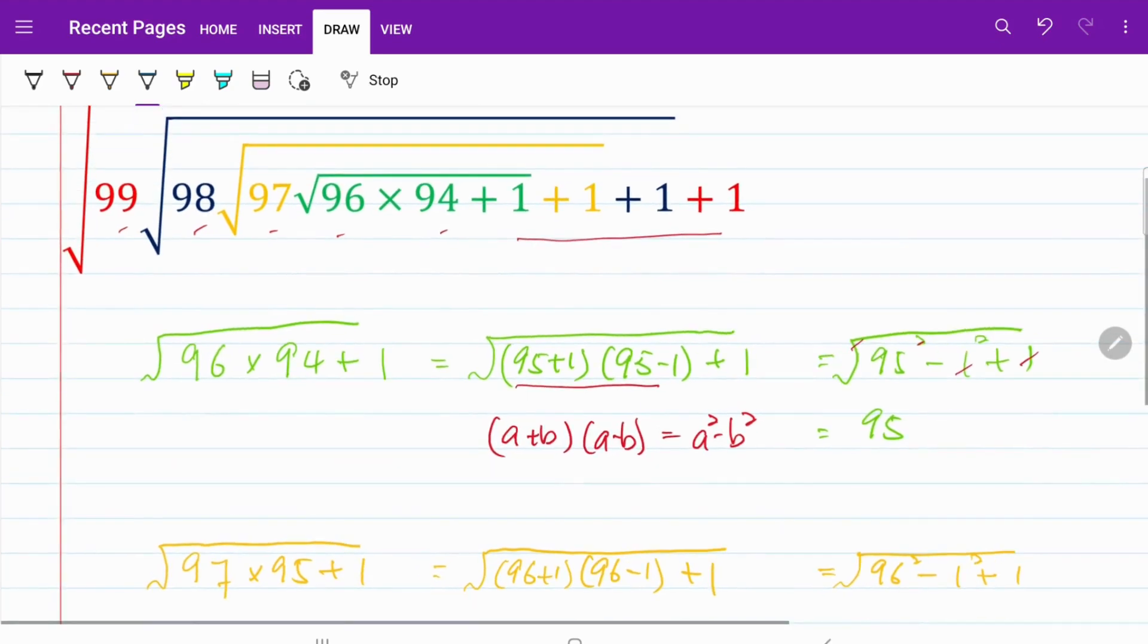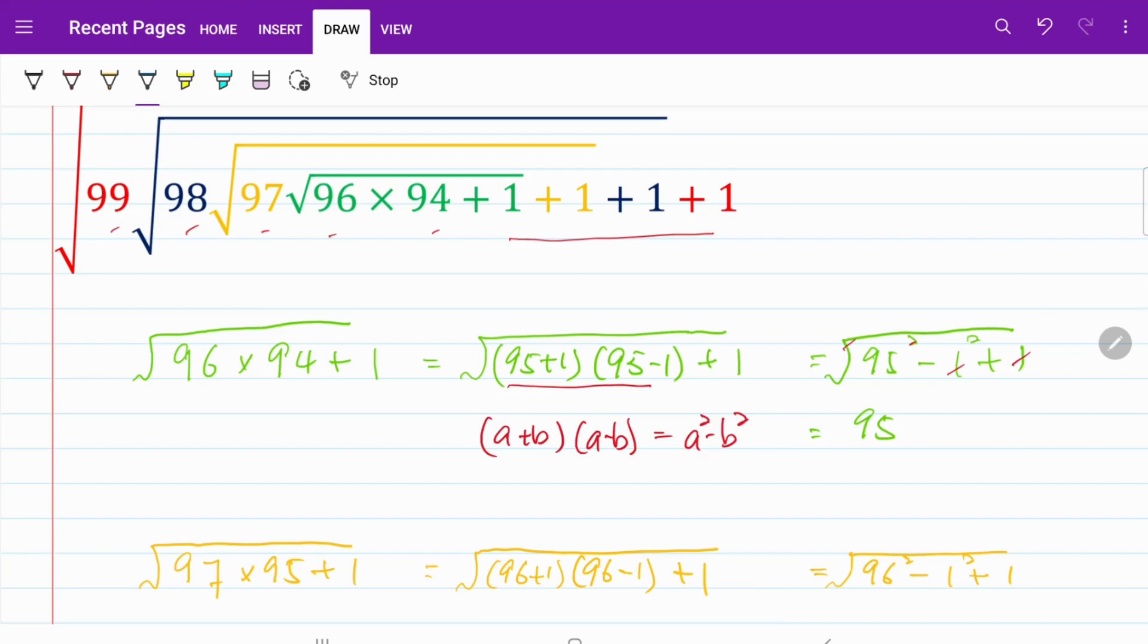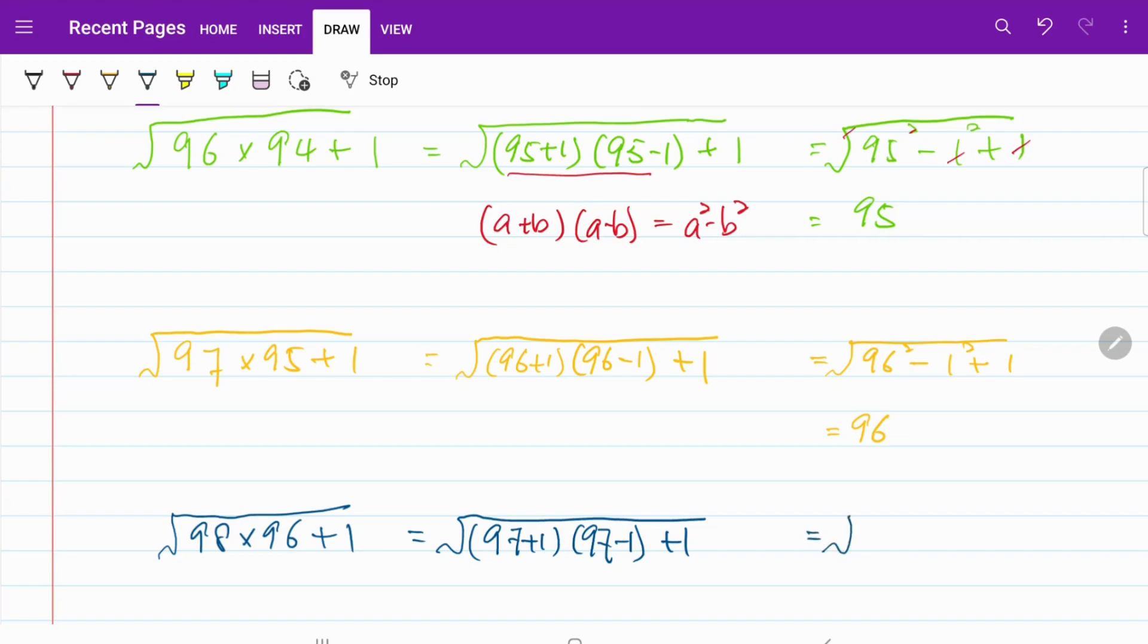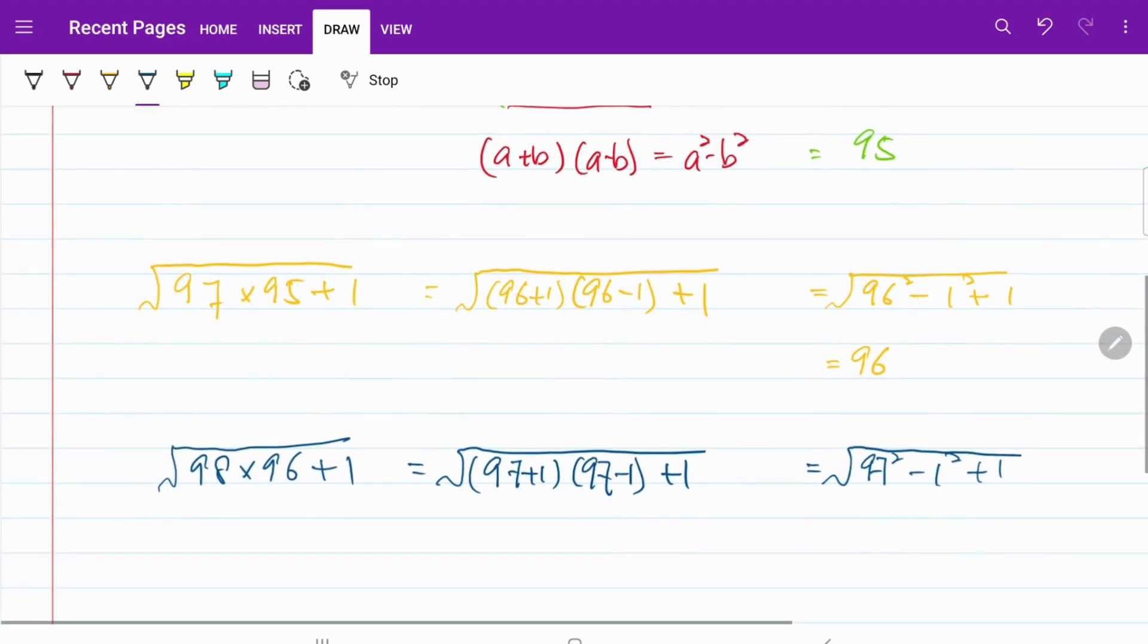Now we are focusing on the blue square root. The blue square root will be 98 multiplied by 96 plus 1, which is written as 97 plus 1, 97 minus 1 plus 1, which is the same thing, 97 squared minus 1 squared plus 1, which is equal to 97.